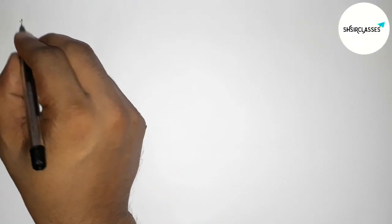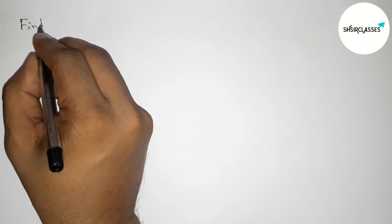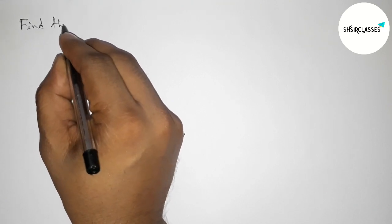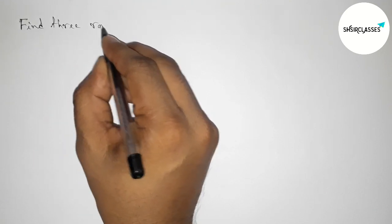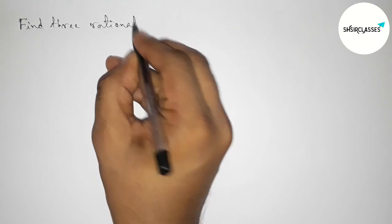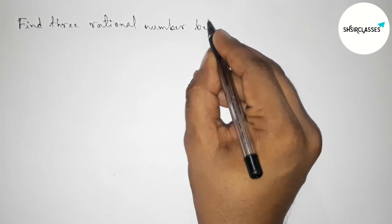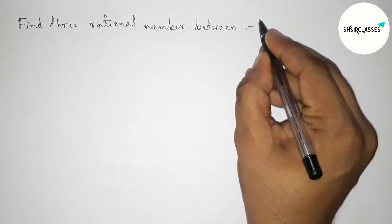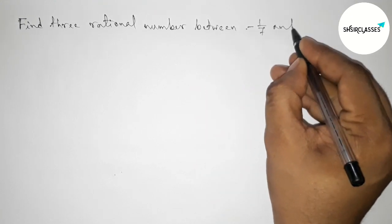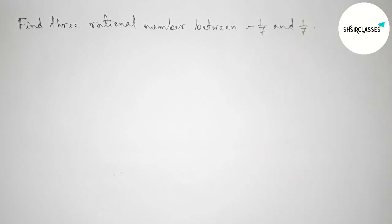Hi everyone, welcome to SI Share Classes. Today in this video we have to find three rational numbers between -1/7 and 1/7 in an easy way. So please watch the video till the end, so let's start the video.